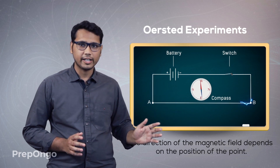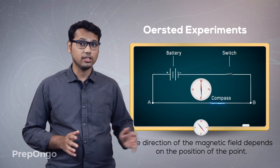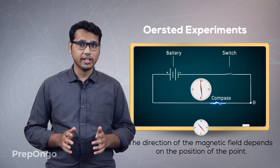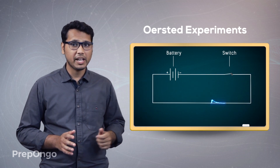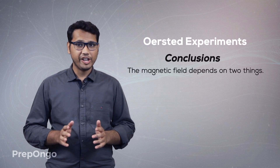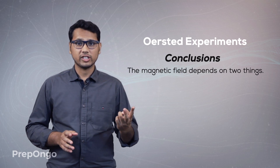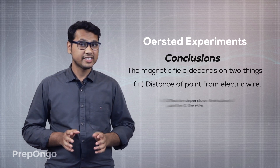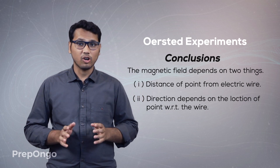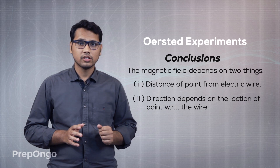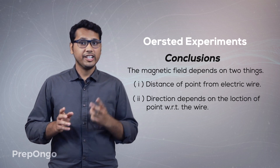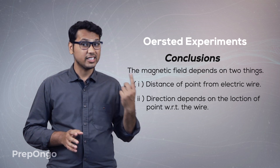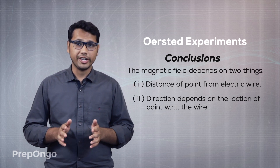In the first case, the needle was kept below the wire, so it deflected in the downward direction. In the second case, it was kept above the wire, so it deflected in the upward direction. By this experiment, Oersted concluded that the magnetic field produced by an electric current depends on two things: first, the distance of the point from the electric wire; and second, the direction also depends on the location of the point with respect to the wire. So only two things are required — distance and location of the point from the electric wire.